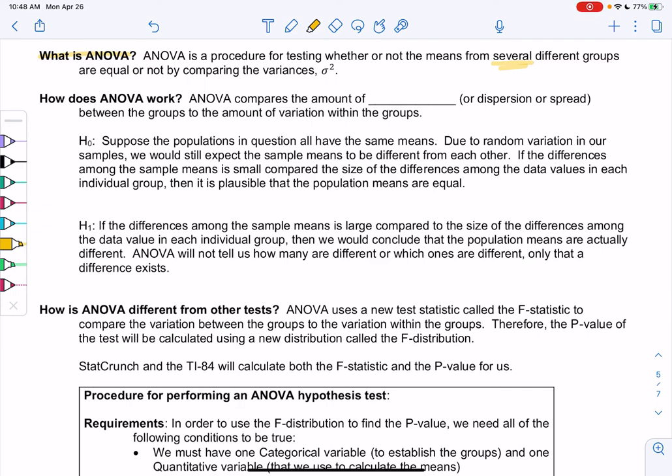So how does it work? Why is it comparing variation? ANOVA compares the amount of variation or dispersion or spread between the groups and then within the groups. So how much variation between each group and then how much within the group, and that can kind of give us an idea if they're the same or not. But don't worry, technology is doing all this math for us.